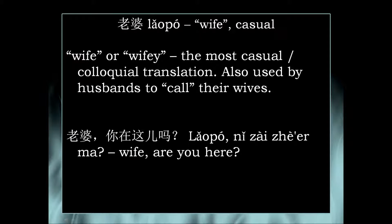And finally, 老婆, which means wife — or in some English dialects, 'wifey.' It's the most casual way of saying wife, and it's also used by husbands to call their wives in an affectionate way. Here's an example: 老婆, 你在这儿吗? — 'Wife, are you here?' Because 老婆 is casual, you wouldn't typically use the other two in this context — saying 太太, 你在这儿吗? or 妻子, 你在这儿吗? sounds too formal. So 老婆 is the most casual version. Thanks for watching this video.